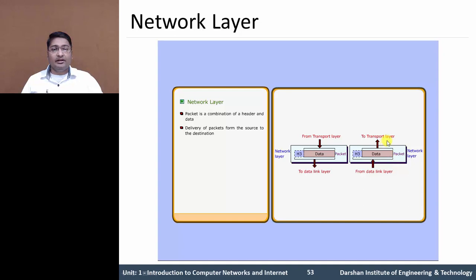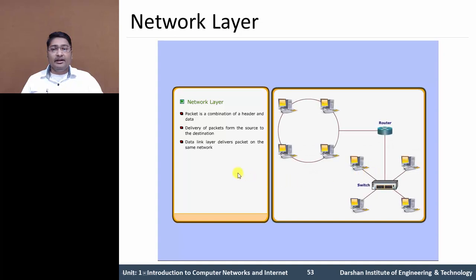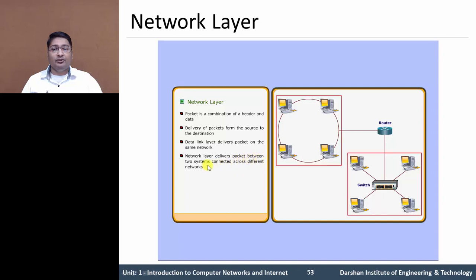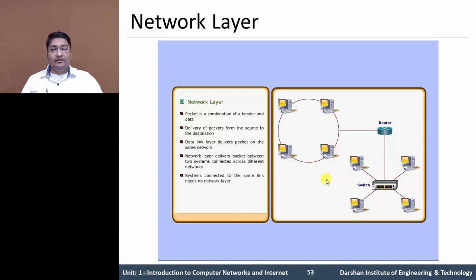As shown in the figure, data flows from the transport layer to the network layer and then to the data link layer. The data link layer handles delivery of packets on the same network, whereas the network layer handles delivery across two different networks. When systems are connected on the same link, there is no need for the network layer. But when two different networks are connected to each other via routers and switches, we need the network layer.